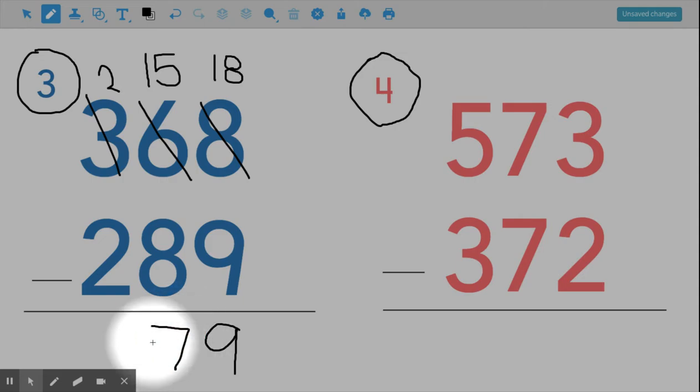Okay, we've got our hundreds column. Two take away two is zero. We do not need to write our zero there because it is nothing, so we just leave it. And our answer is seventy-nine.